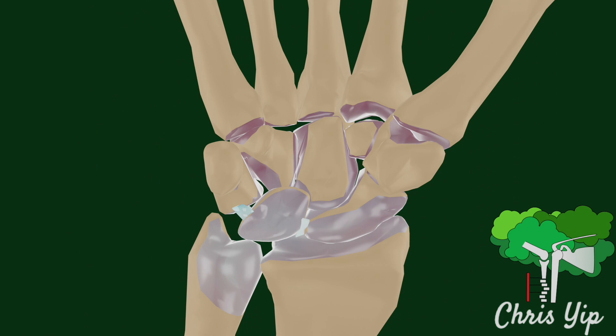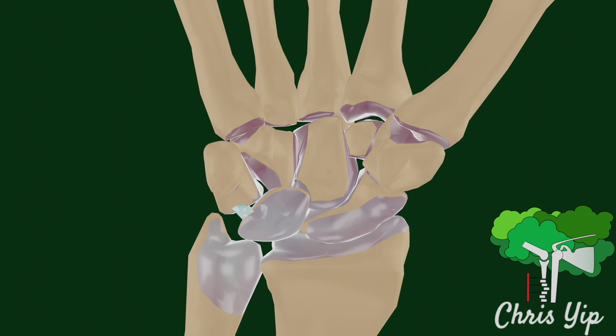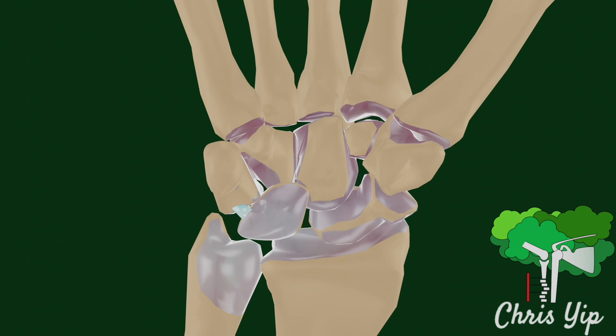Scapholunate ligament injuries usually occur as a result of falling onto an outstretched hand. This can lead to the malpositioning of the carpal bones, known as a dorsal intercalated segment instability. As the scapholunate ligament is injured, the lunotriquetral ligaments will exert a net extension force onto the lunate, which will cause it to hyperextend. The scaphoid, on the other hand, can undergo some flexion and radial displacement.